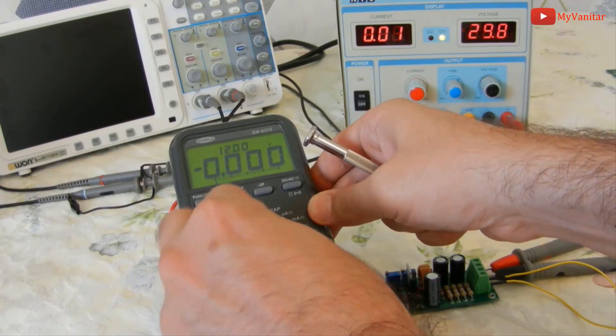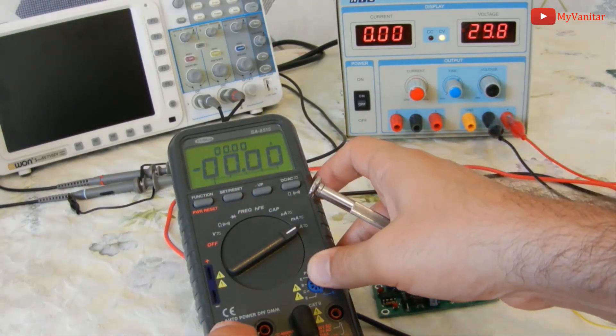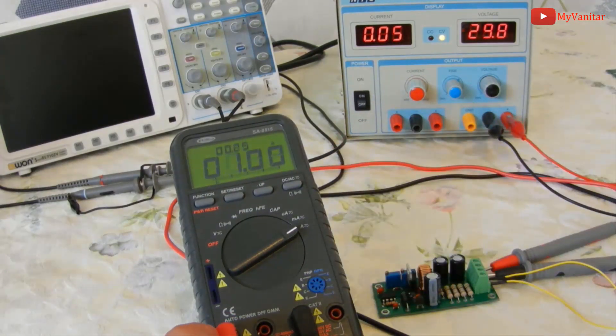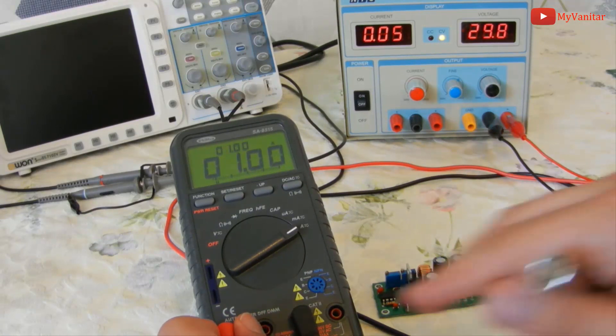Let's check the output current again. Can we read 1 amp? Yes, this is 1 amp as we had set before.